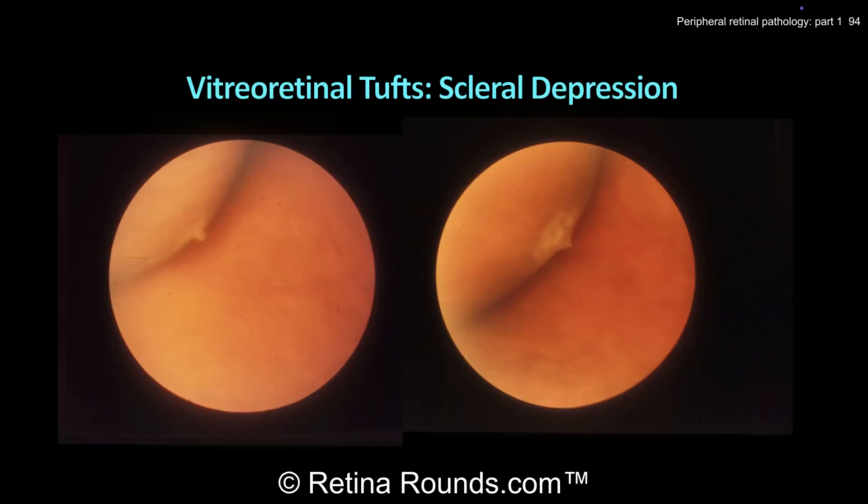Vitreo-retinal tufts may be small and difficult to identify. Scleral depression can help better visualize these lesions when viewed from an oblique angle. This can also help to identify cystic spaces within the tuft and distinguish tufts associated with cystic changes from those with small associated retinal breaks.